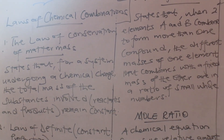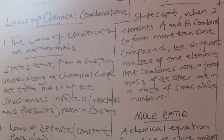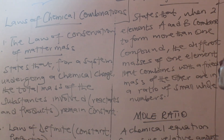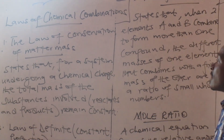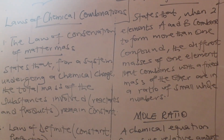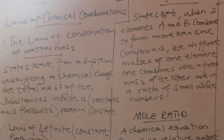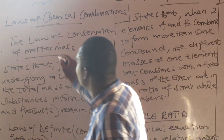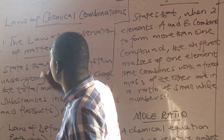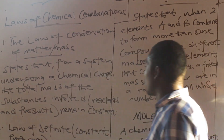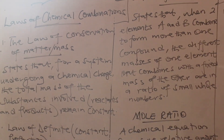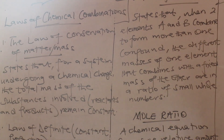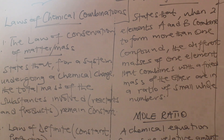Okay, so let's continue. The laws of chemical combinations. We have the law of conservation of matter or mass, the law of definite constant proportion, and the law of multiple proportion.